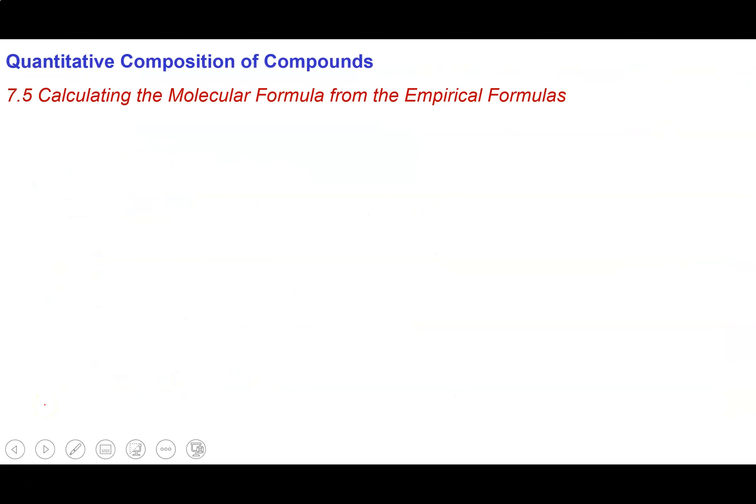That's how we calculate the molecular formula from an empirical formula. Sometimes we're given the percent composition and go all the way from percent composition to empirical formula to molecular formula, and other times we're given the empirical formula and just start from there. The key thing is that we need an additional piece of information: the molecular formula mass, also known as the molar mass of the compound.